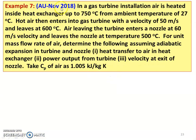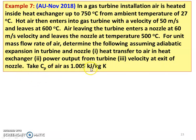Example number 7 from the November 2018 question paper. In a gas turbine installation, air is heated inside a heat exchanger up to 750 degree Celsius from the ambient temperature of 27 degree Celsius. Hot air then enters the gas turbine with a velocity of 50 meters per second and leaves at 600 degree Celsius. Air leaving the turbine enters a nozzle at 60 meters per second and leaves the nozzle at a temperature of 500 degree Celsius. For unit mass flow rate of air, determine: one, heat transfer to the air in the heat exchanger; two, power output from the turbine; three, velocity at the exit of the nozzle. Take CP of air equal to 1.005 kJ per kilogram Kelvin.